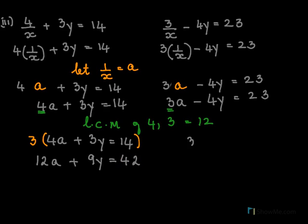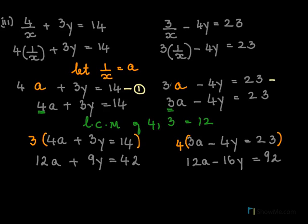And for the next equation this is 3a minus 4y equal to 23. I need to make it 12, so multiply this by 4. So here we will have 12a minus 16y equals 92. We will write these as equations. This one was our equation 1. This was equation 2. We will put this as equation 3 and equation 4.